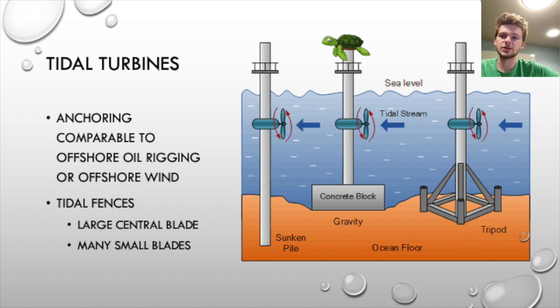Another system that's similar would be tidal fences, which often consist of a protruding wall with potentially a large central blade, or it might have many small openings with smaller blades similar to the tidal turbines, but in more of a protruding concrete fence structure.